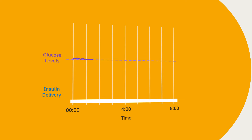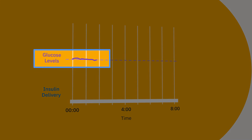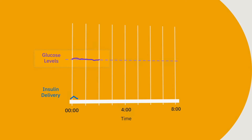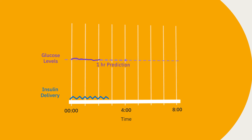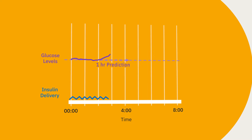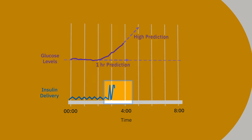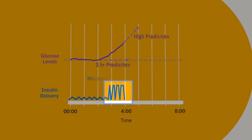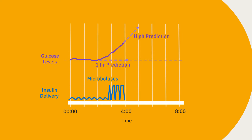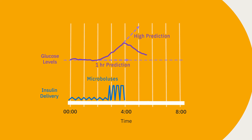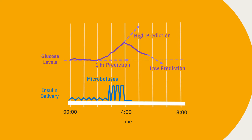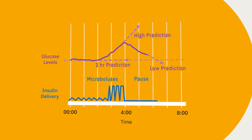If sensor values are trending steady in range and not predicted to rise or fall, the pod will generally deliver a steady amount of insulin to keep your sensor values near your target glucose. If sensor values are predicted to rise above the target glucose, the pod will generally increase insulin delivery to bring your sensor values back towards your target glucose. If sensor values are at or predicted to go below target glucose, the pod will generally decrease or pause insulin delivery to help you avoid going below your target glucose.